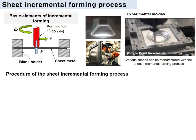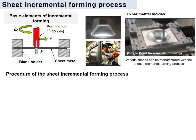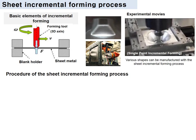It requires three basic devices: the tool, sheet holder, and material. The tool is a cylindrical shape; the tip of the tool is machined with a spherical shape. The tool is connected to the three-dimensional CNC machine, and moves along the dedicated tool path. As you can see in the movie, the tool moves along the designed tool path, and various shapes can be manufactured with the sheet incremental forming process.